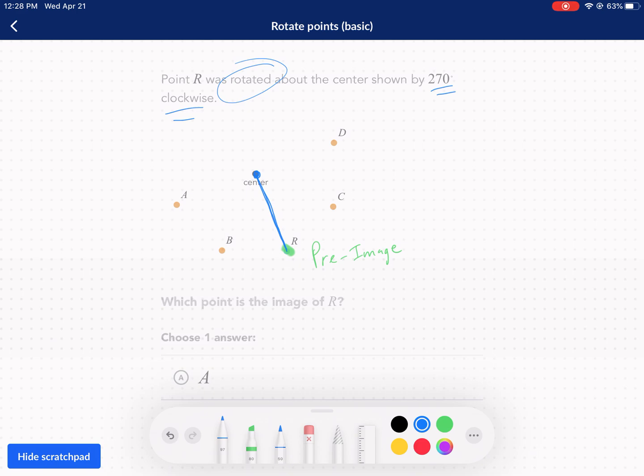A couple things about clockwise and counterclockwise rotations. Number one, if we're talking about counterclockwise, technically these are the positive rotations. So positive 190 degrees would look like that. A negative 270 would be over here this way.